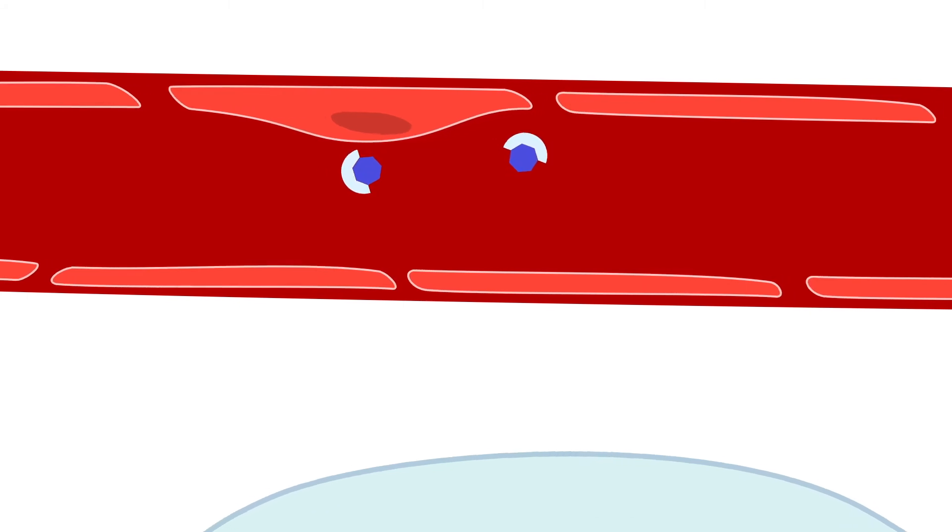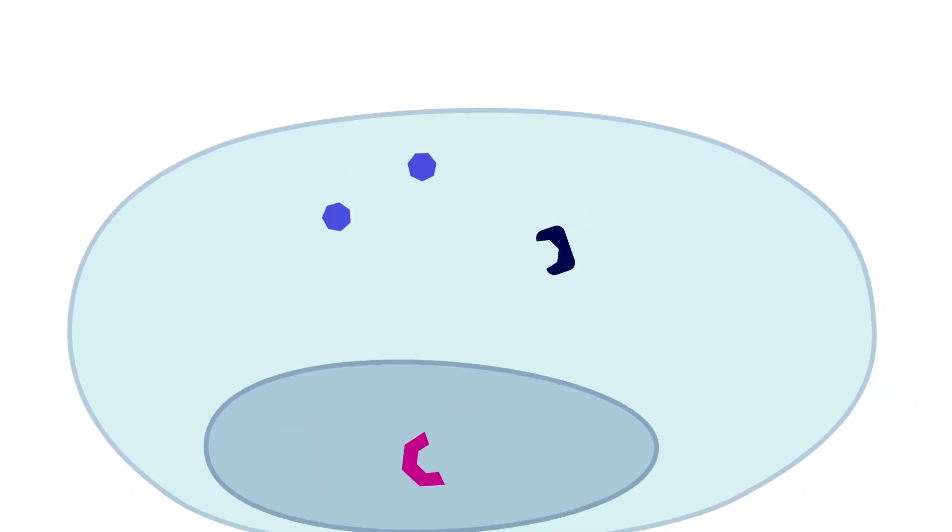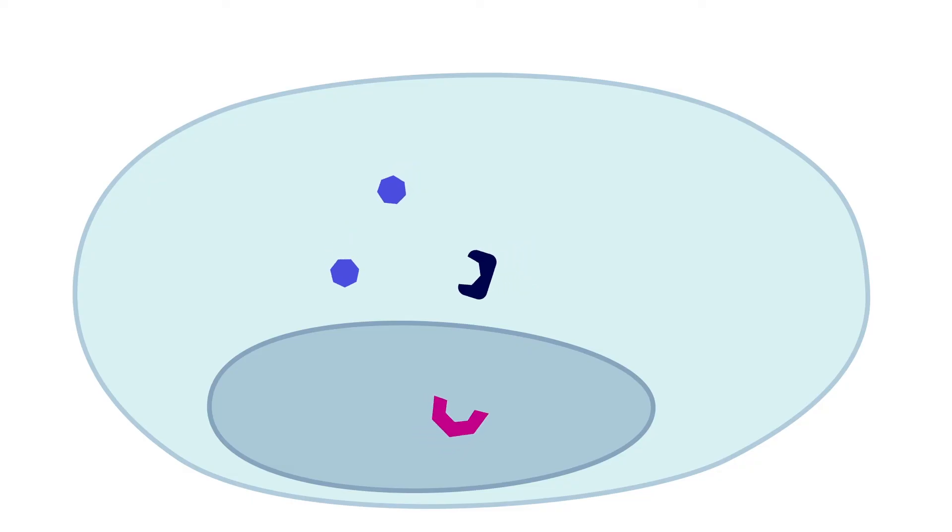If they're going to work on a cell, first they have to unbind from their carrier proteins and once they've done that they can pass right through the cell membranes and activate receptors within the cell itself. Receptors can be in the cytoplasm or even in the nucleus.